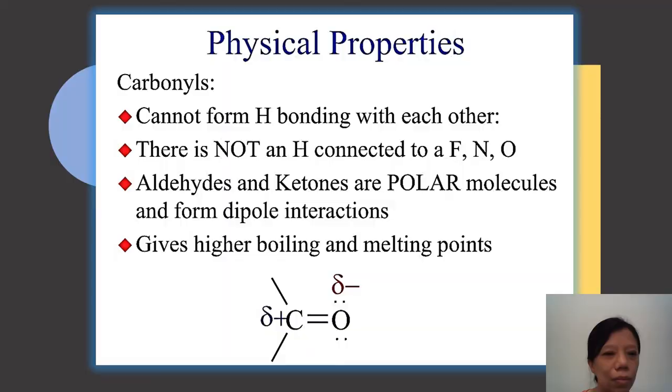Let's look at physical properties. Physical properties of carbonyl compounds: they cannot form hydrogen bonding with each other because they don't have very electronegative atoms such as fluorine, nitrogen, or oxygen that are bonded to hydrogen atoms. But aldehydes and ketones are polar because they have oxygen atoms bonded to carbon. That's why they have higher boiling points and melting points than comparable alkanes.